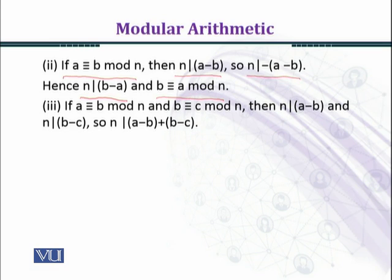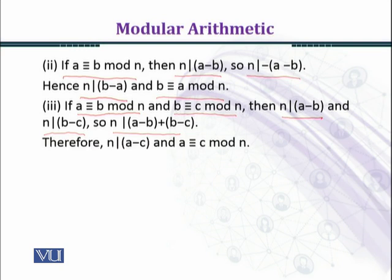We prove the transitive property. If a is congruent to b modulo n and b is congruent to c modulo n, we need to prove a is congruent to c modulo n. By definition n divides a minus b and n divides b minus c, and we shall get n divides a minus b plus b minus c. We have used the property of divisibility. n divides a minus c. It implies that a is congruent to c modulo n. We have proved that the congruence relation satisfies the transitive property.